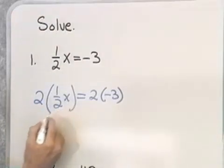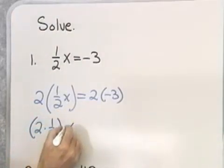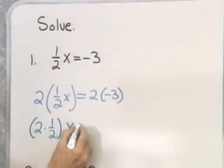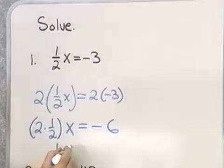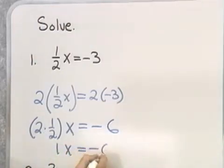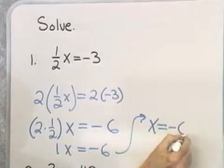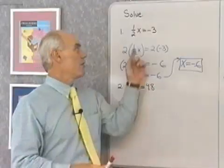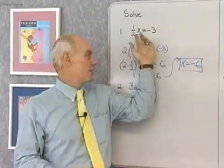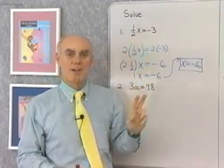2 times 1/2 x is the same as 2 times 1/2 times x by the associative property of multiplication. 2 times 1/2 is 1, times x equals negative 6, and that's the same as x is equal to negative 6. So when I have a number other than 1 in front of x, I can solve for x by multiplying both sides by the reciprocal of that number.